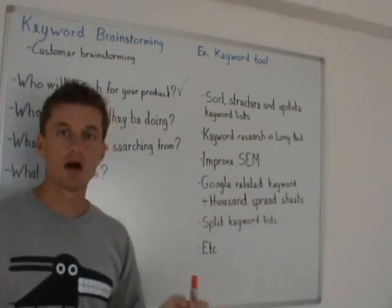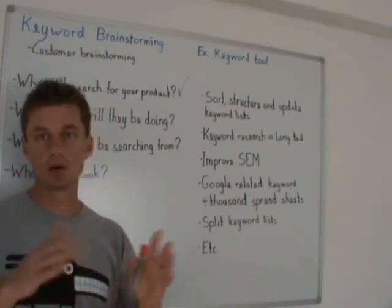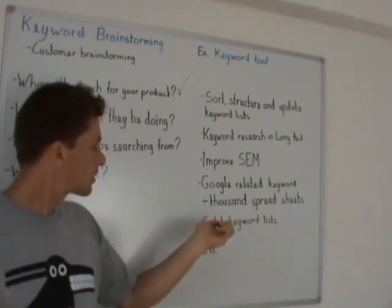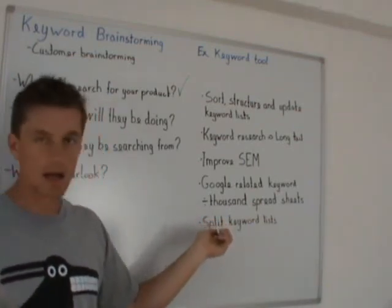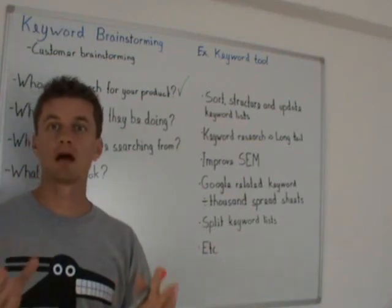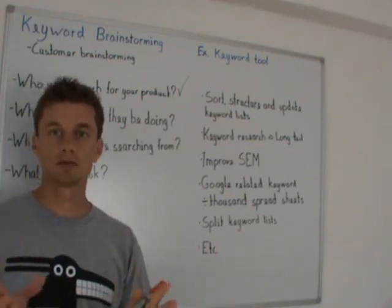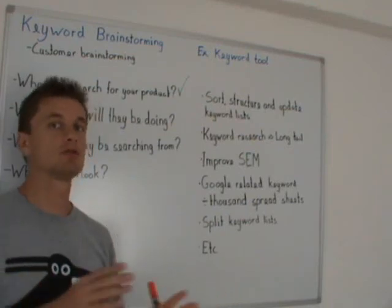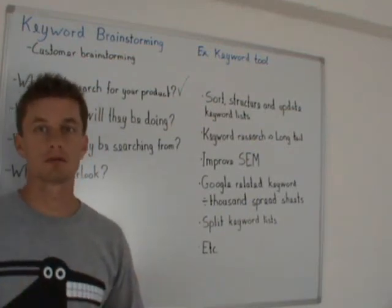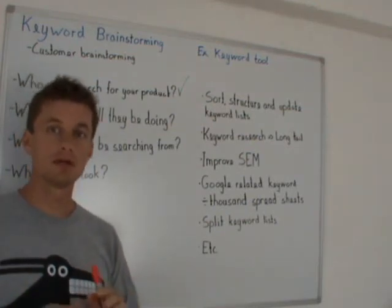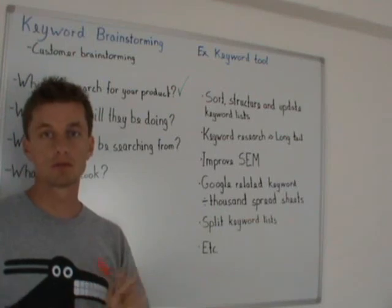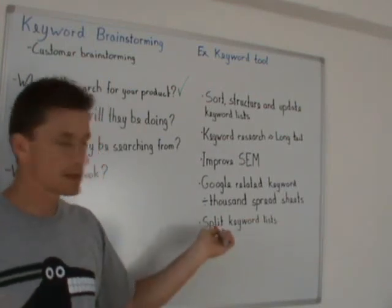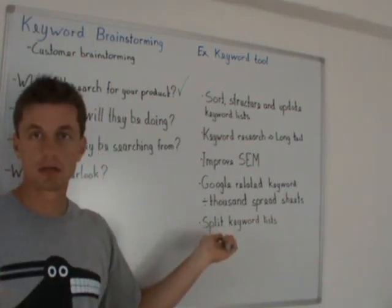Same if you have a niche and a keyword list that you expand, and then at some point you find out there are maybe three different kinds of customers, so you want three different landing pages, or they're searching for three different kinds of products. You can identify some keywords — some go to one product, some go to another — and you want to split and tag those keywords accordingly.